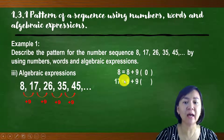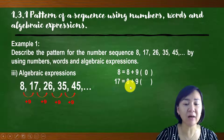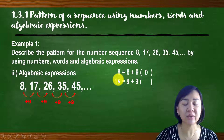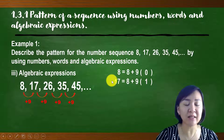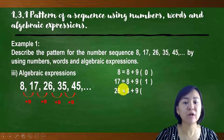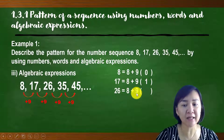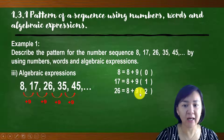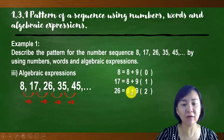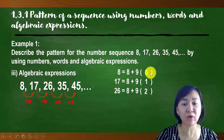For the third term 26: starting with 8, the pattern is plus 9. Multiplying 2 by 9 gives 18, then 18 plus 8 gives 26. We can see the pattern follows the sequence with multipliers starting at 0, 1, and 2. For the fourth term 35: 3 times 9 is 27, then plus 8 gives 35.